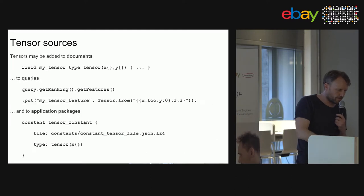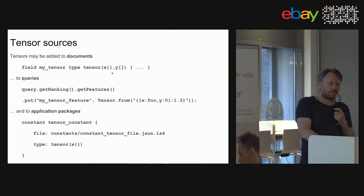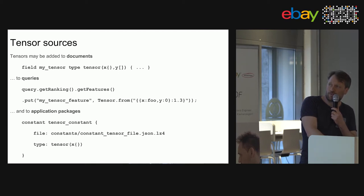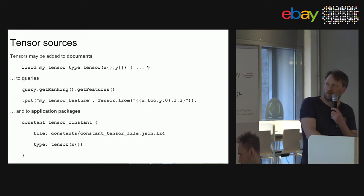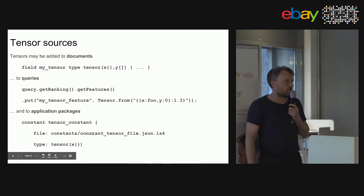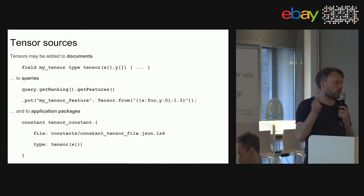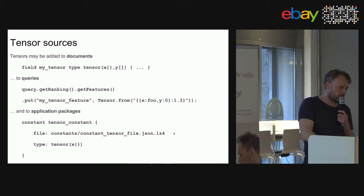Tensors can appear in documents — you declare a tensor field in your schema specifying the type, and can mark it as an attribute or not. You can also send tensors with queries, or add tensors as constants to the application package, which is relevant for tensors that are part of your machine-learned models. Those tensors are often large, so they can be compressed.